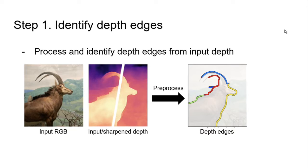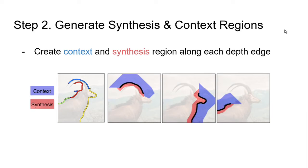Given a single RGBD image as input, we first identify the depth edges. Next, for each detected depth edge, we generate a context and a synthesis region.